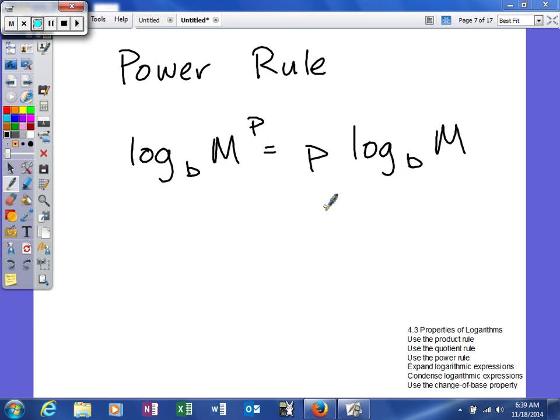The last of properties we'll be talking about is the power rule, and what the power rule basically says is if you're taking the log base b of m to the p power, anytime you're taking the log of something that has an exponent, you can take that exponent and rewrite it as a coefficient of your logarithm.